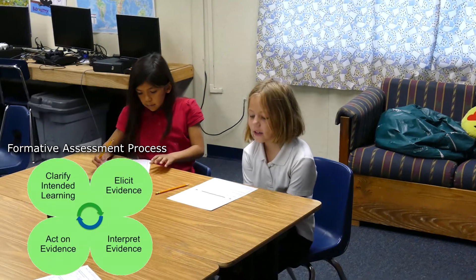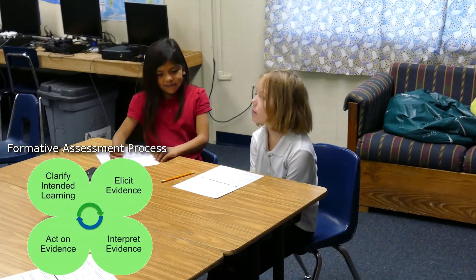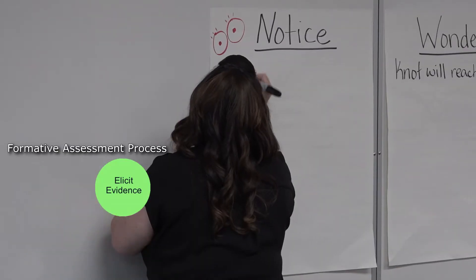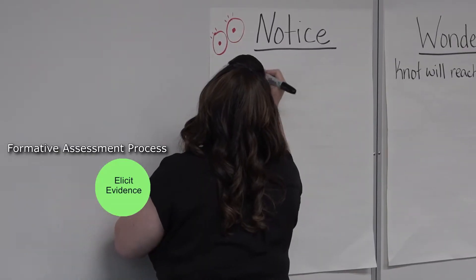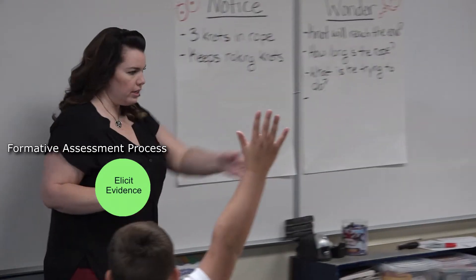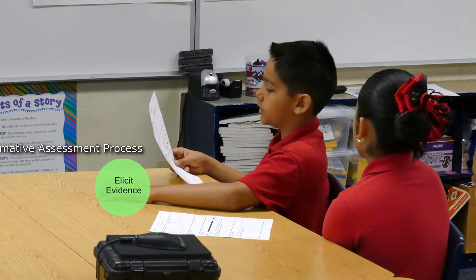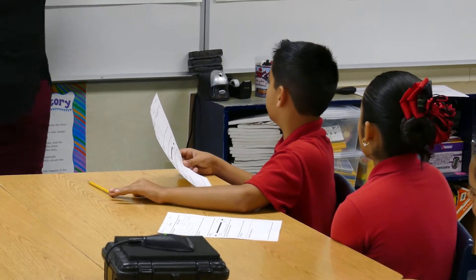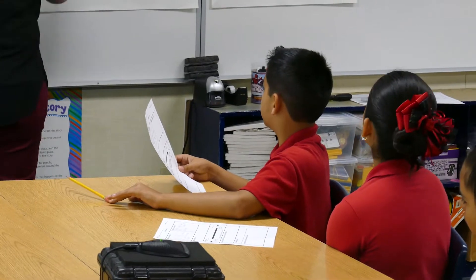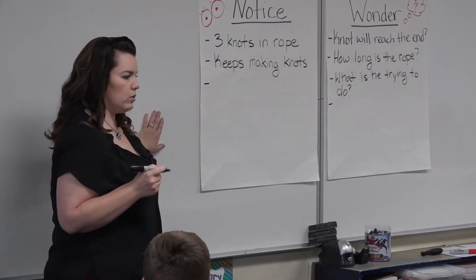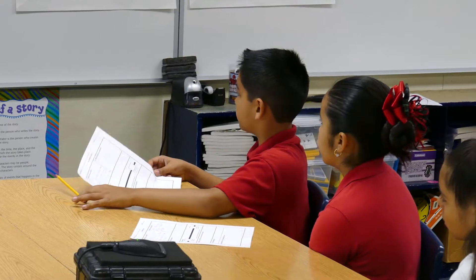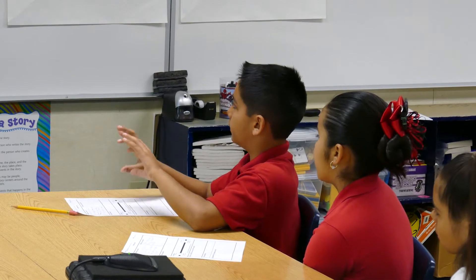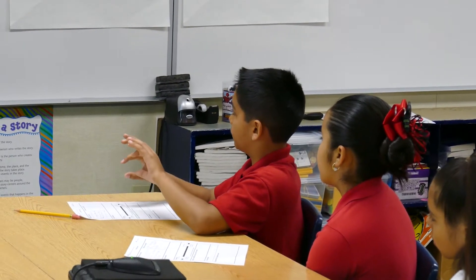I noticed three knots in the rope. Oh, you noticed three knots. I noticed that the rope got smaller the more the person made knots. Okay, the rope got smaller. What do you mean by smaller? The more he made knots, the less rope there was.